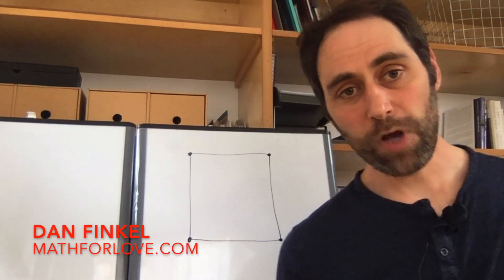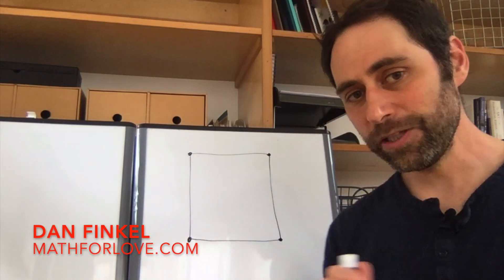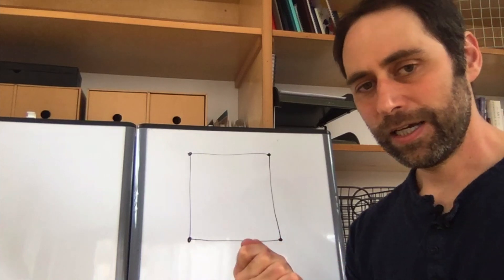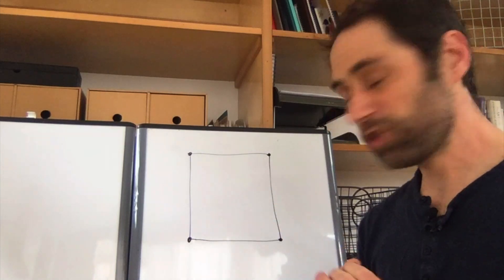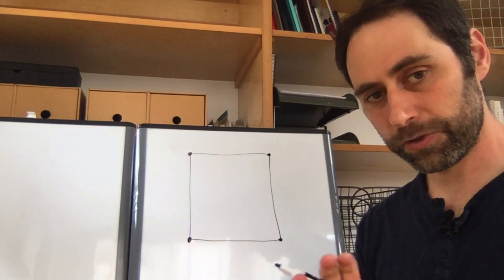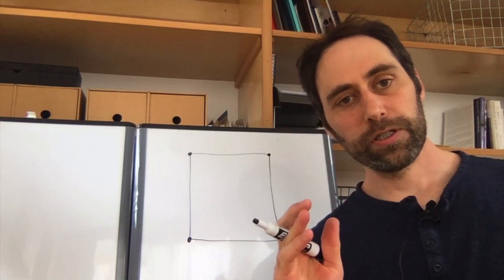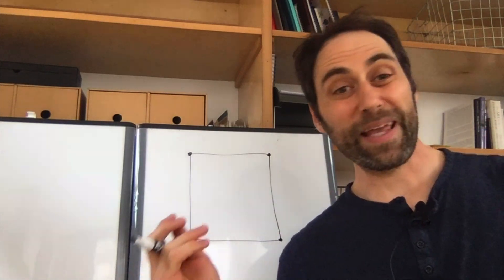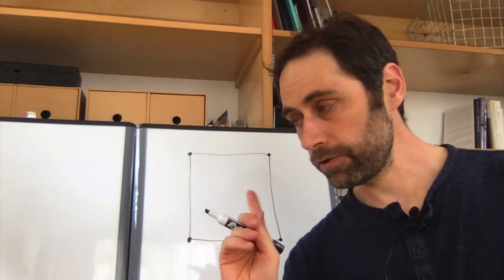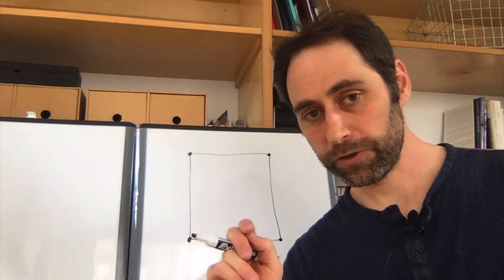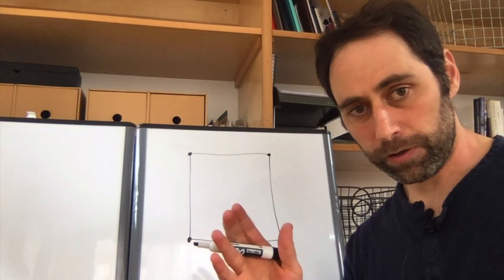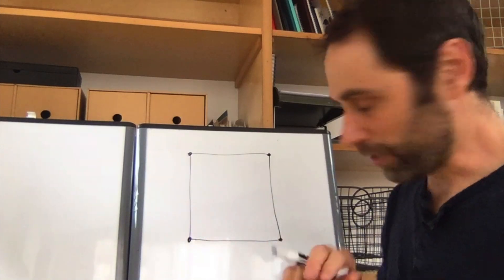Dan here from Math4Love with a challenge for you today. This is a subtraction challenge, and it starts with a square. I've labeled the corners because those are going to be important. The way it works is you get to pick any four numbers to go on each of those corners. I'll pick some small numbers to start — you can do bigger or stranger numbers later, whatever you want to do.